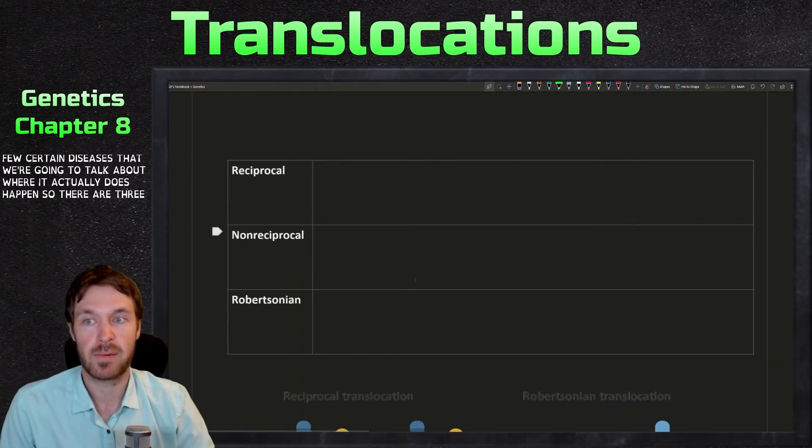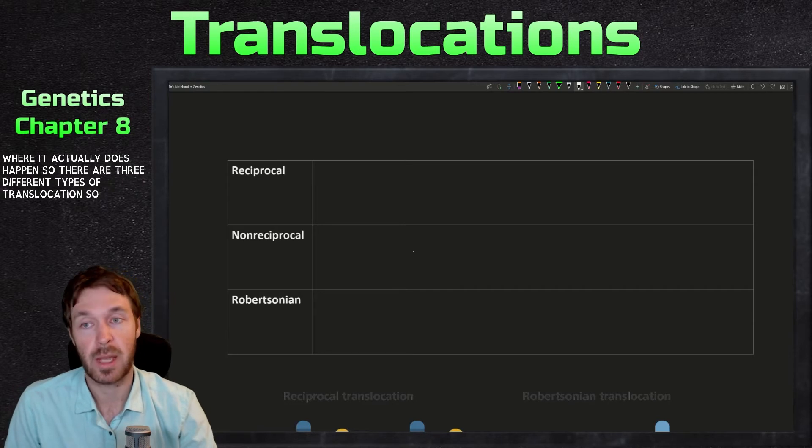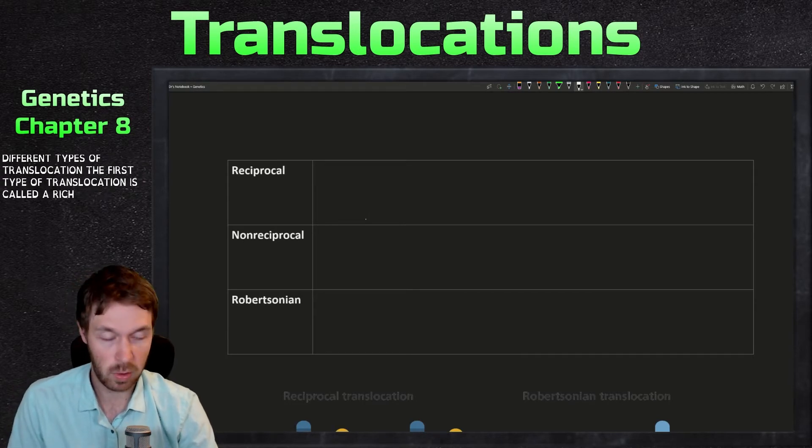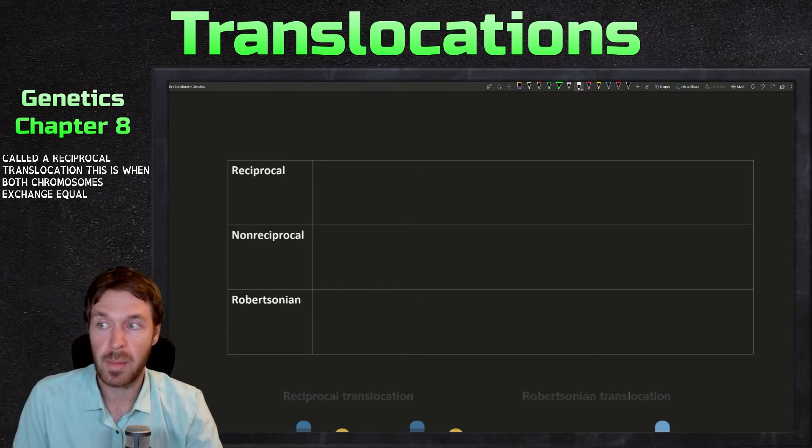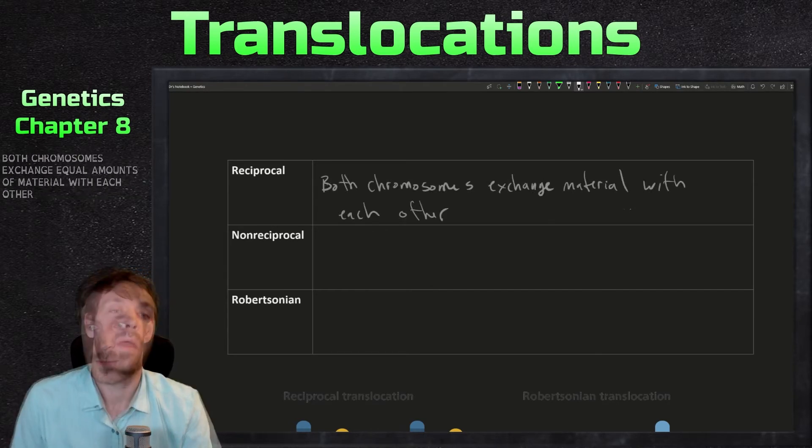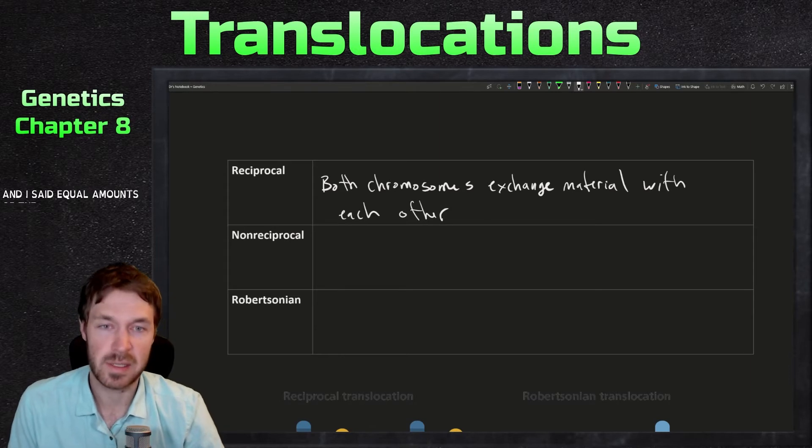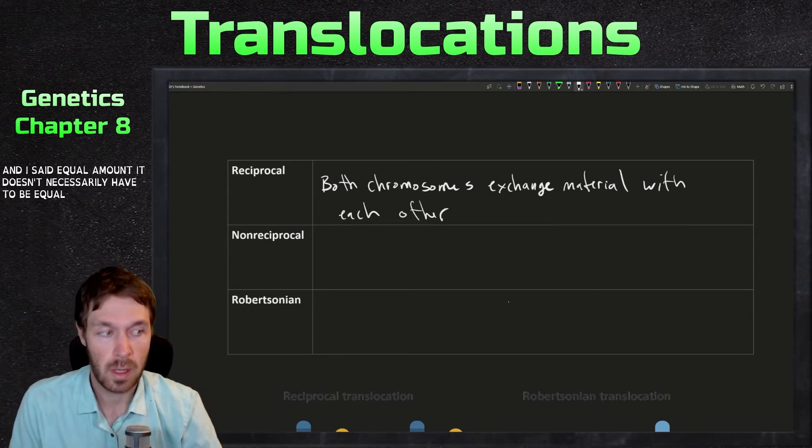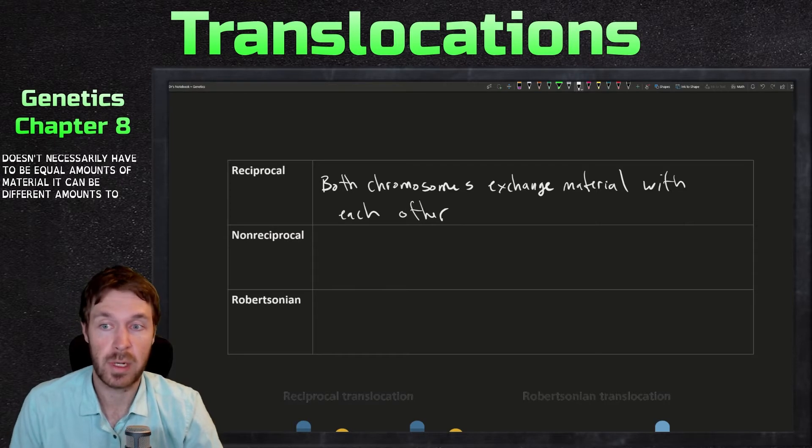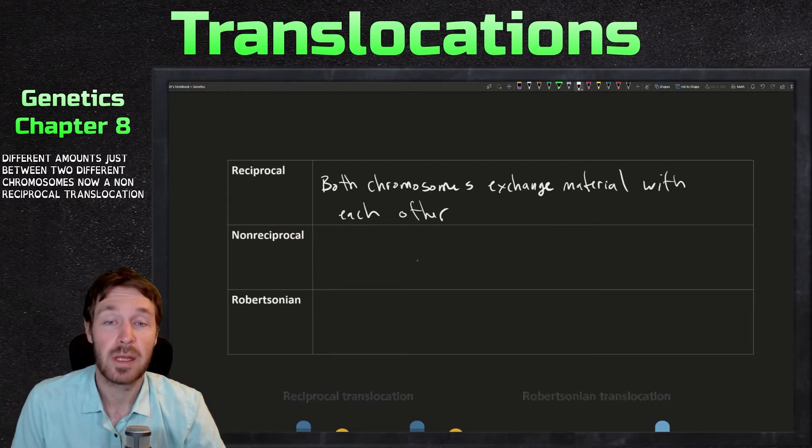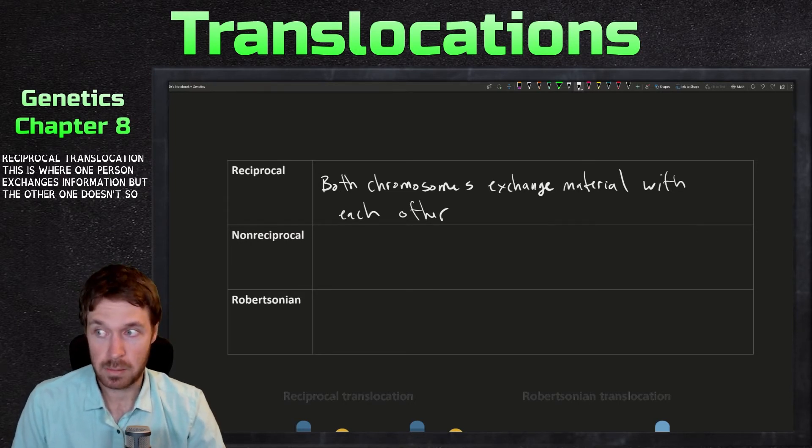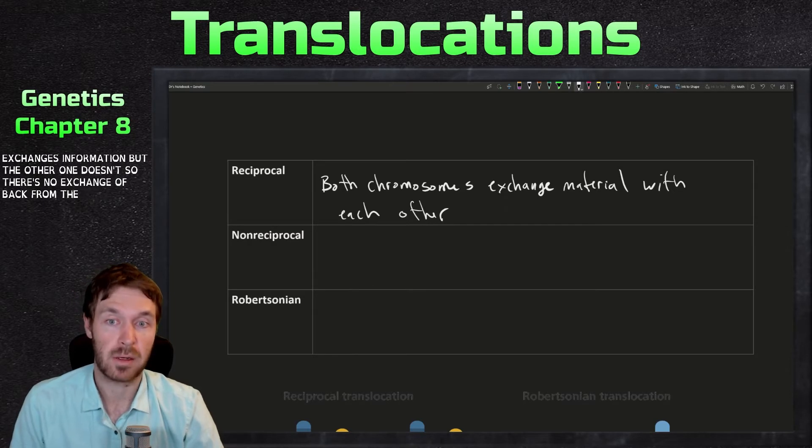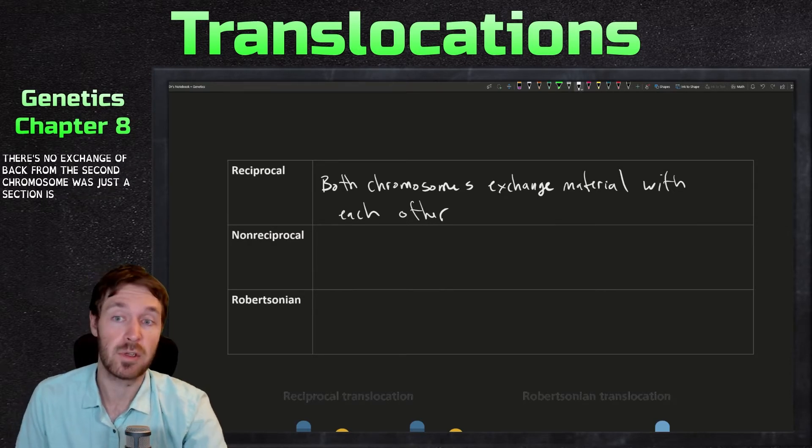So there are three different types of translocations. The first type of translocation is called a reciprocal translocation. This is when both chromosomes exchange equal amounts of material with each other. And I said equal amounts, it doesn't necessarily have to be equal amounts of material. It can be differing amounts just between two different chromosomes. Now a non-reciprocal translocation, this is where one chromosome exchanges information, but the other one doesn't. So there's no exchange back from the second chromosome. Just a section is given to another chromosome.